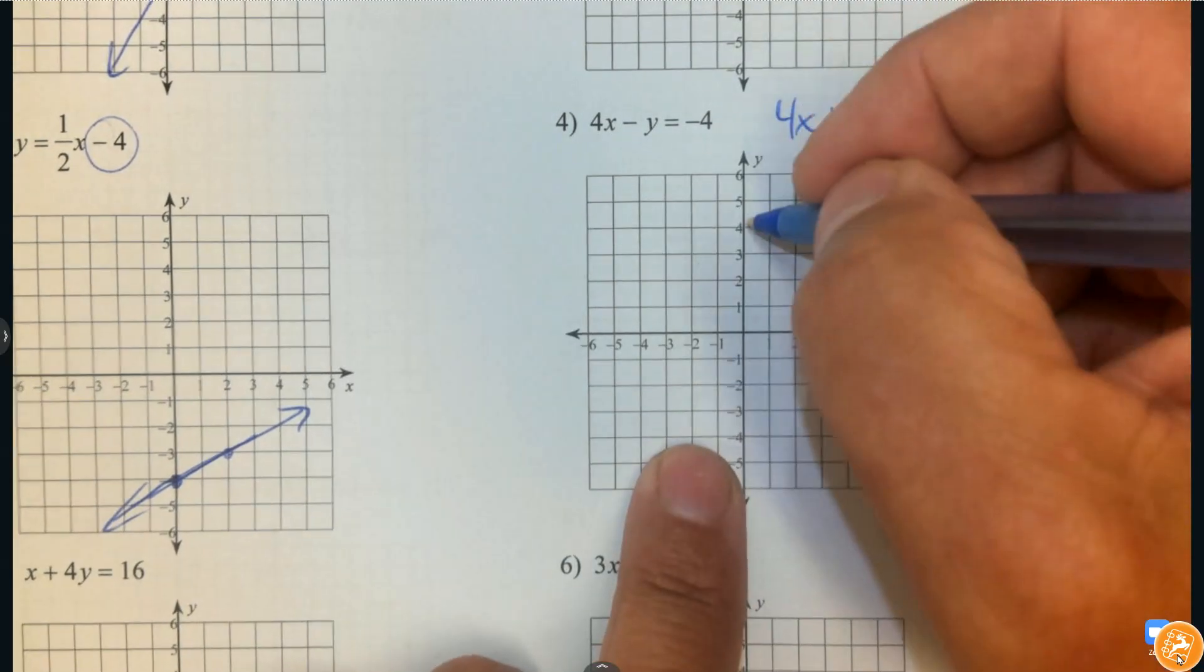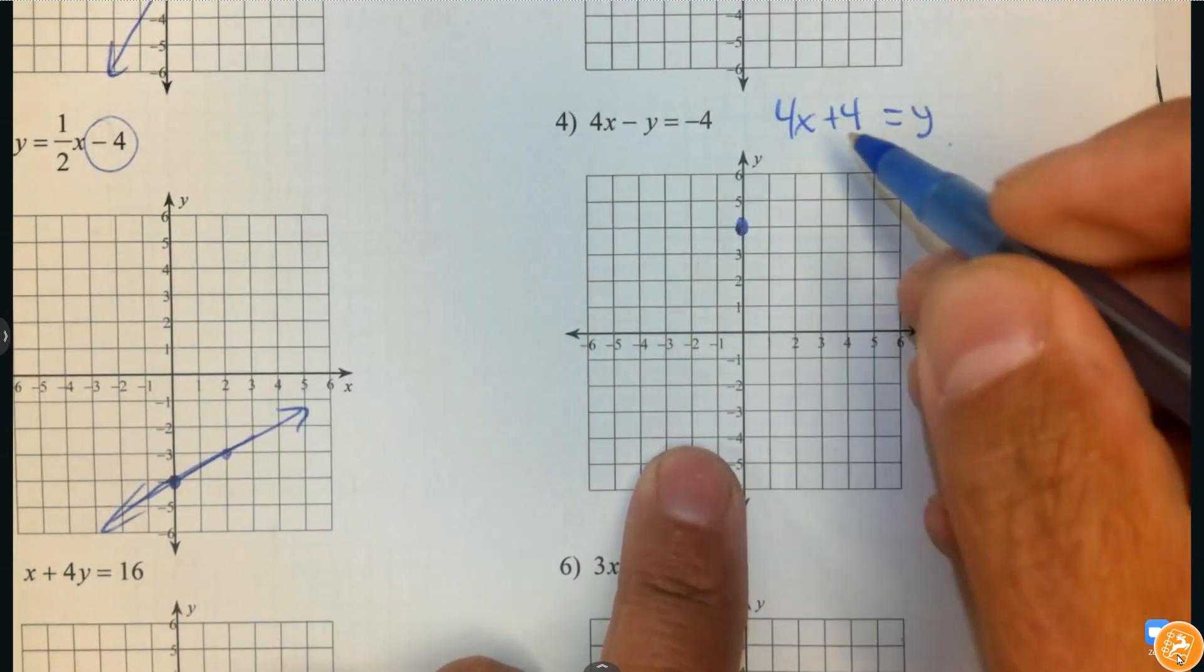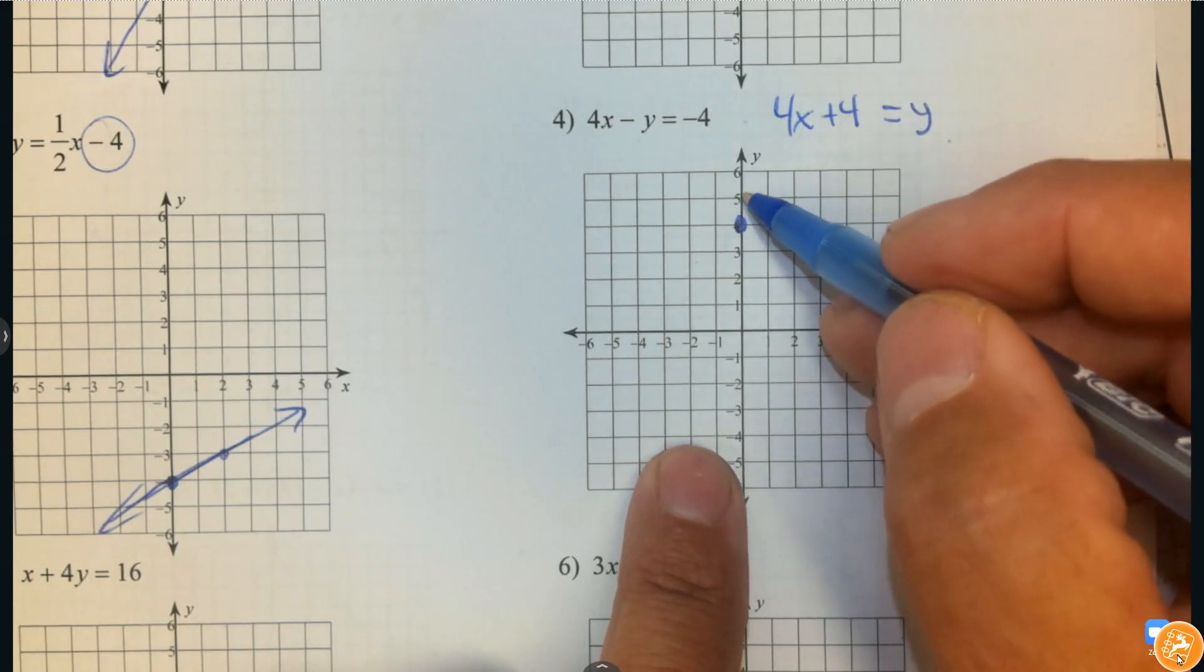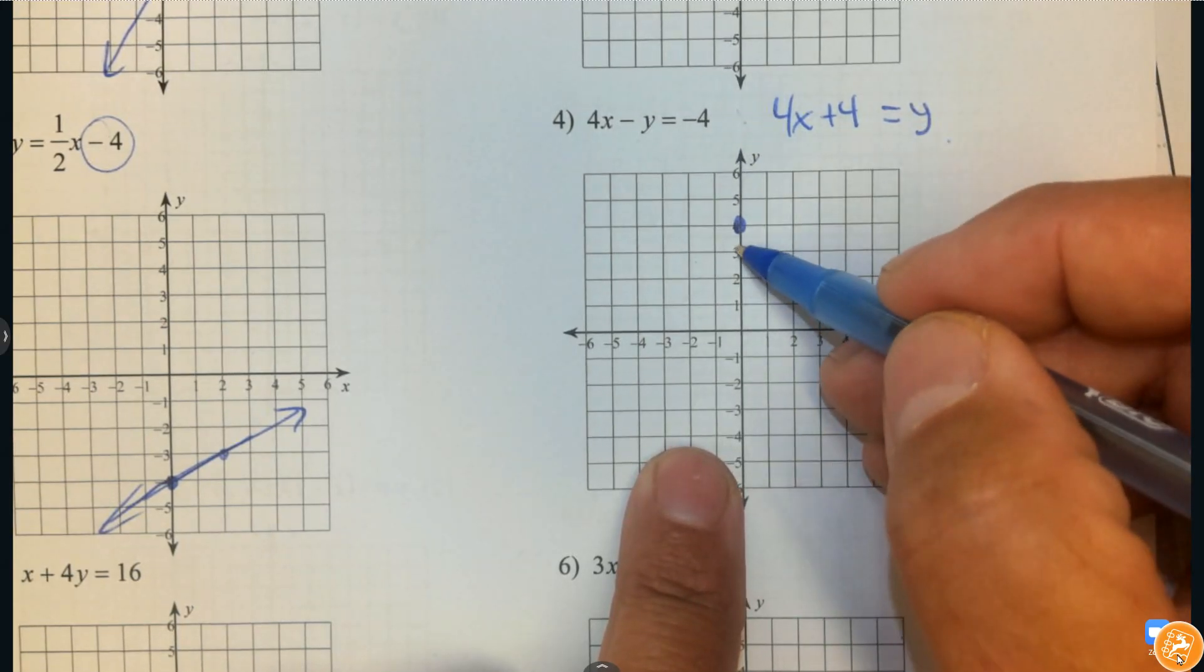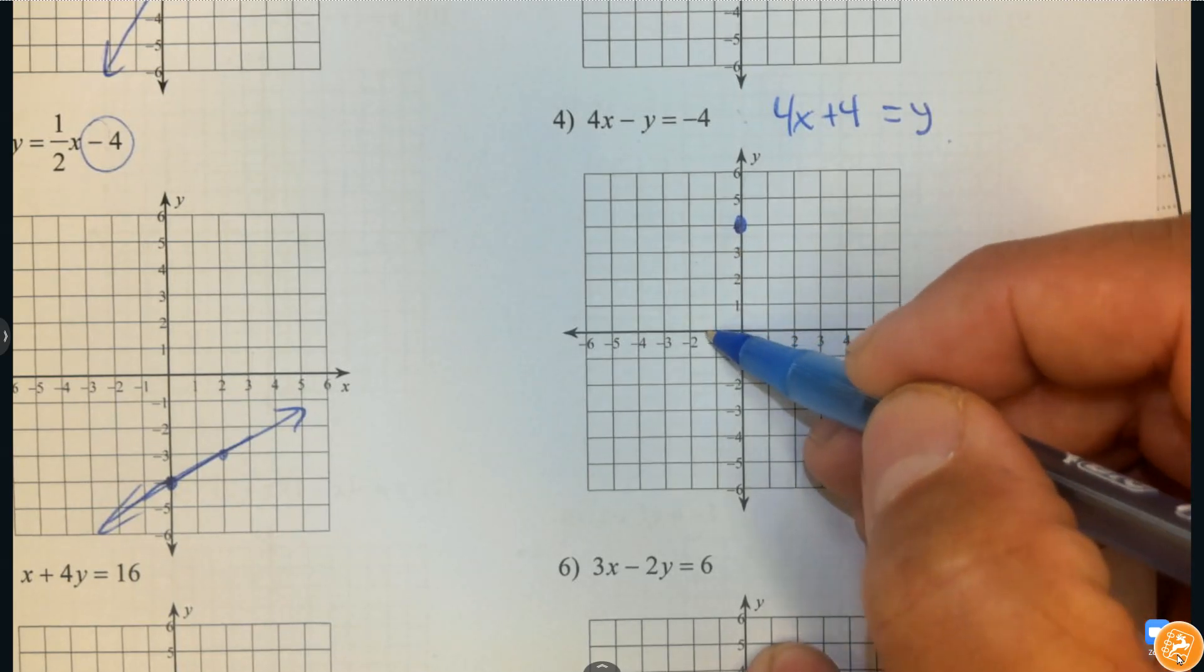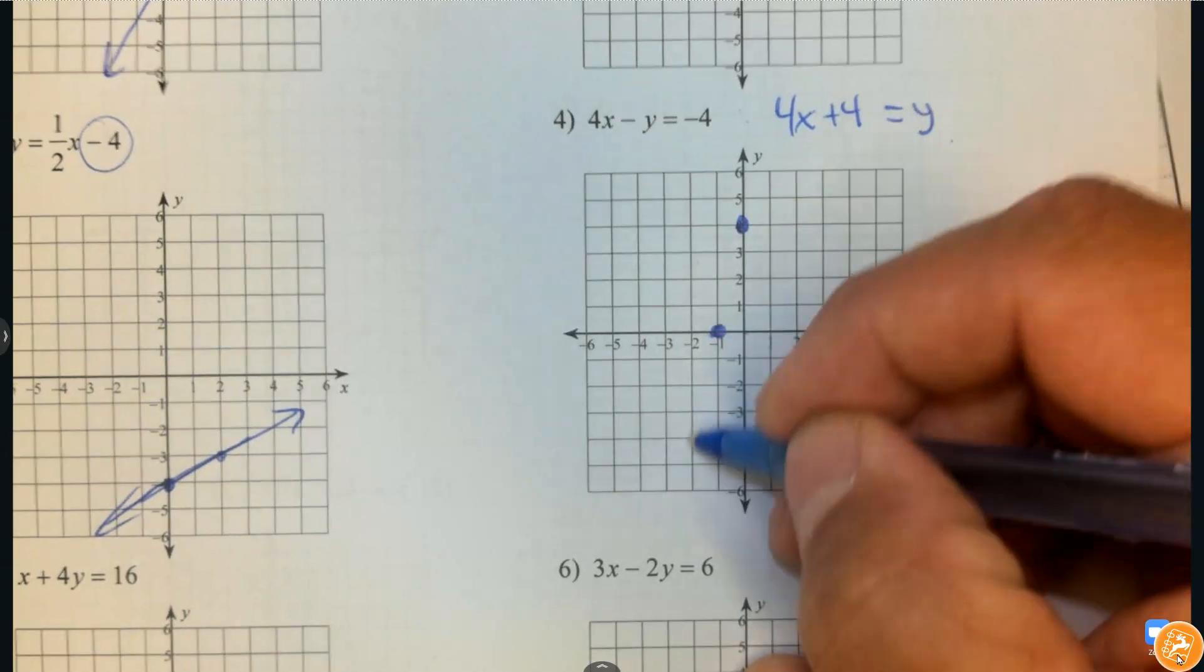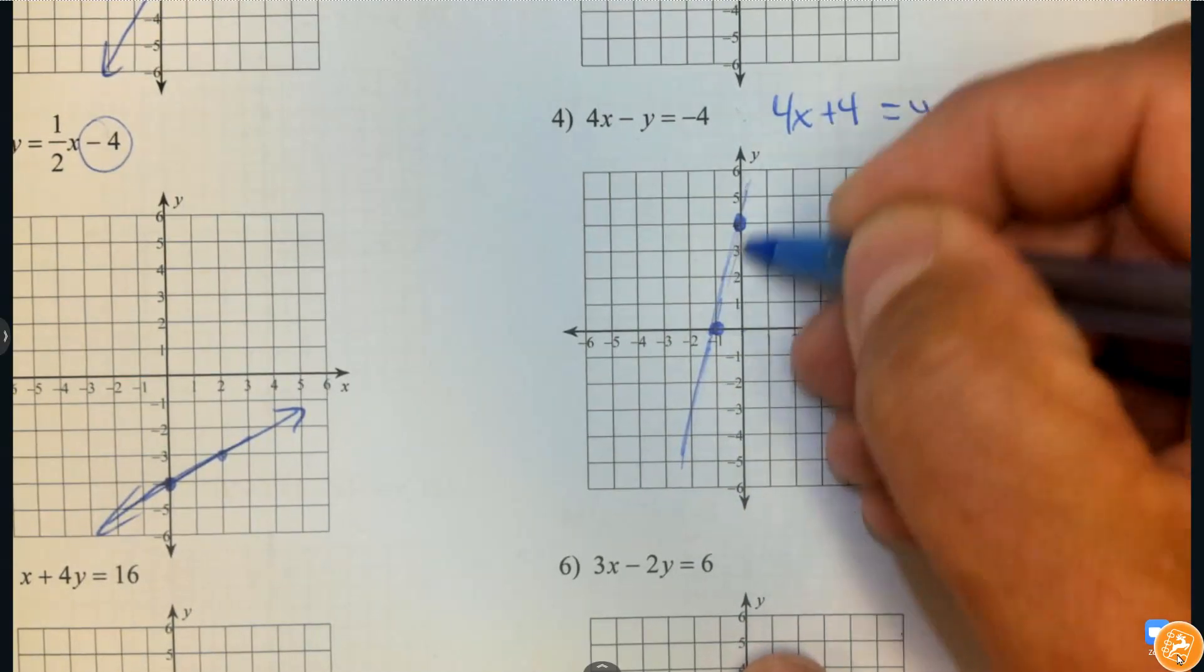So again, the y-intercept's at 4. I want you to notice the slope is 4. And if I count 4, it's off my graph. So I'm not going to go up 4. I'm going to go down 4 and to the left 1. Notice it's still rising. It still has a slope of up 4 and over 1. But now it's stayed on my graph.